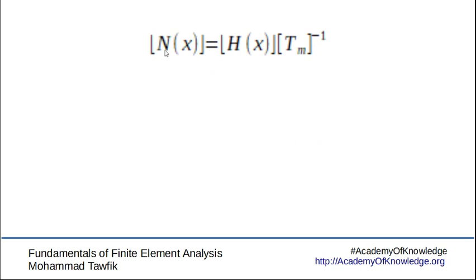Now if we recall from the interpolation function, N of x is equal to H of x, which is a row vector made up of single polynomial terms, specifically in this case it was 1 and x, multiplied by the inverse of the transformation matrix.